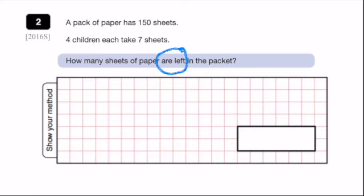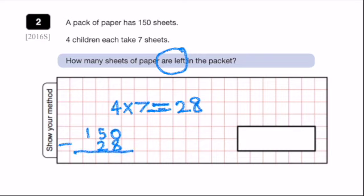Okay, so there are 150 sheets of paper in this packet. Now, 4 children each take 7 sheets. So what I'm going to do is, I'm going to do 4 times 7. That's 28. So that means that 28 sheets are taken from 150. So how many are left? When you hear are left, that's usually a subtraction.